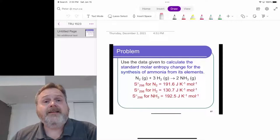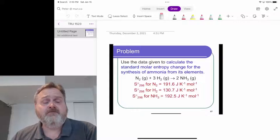In this problem, we're looking to calculate the entropy change at standard conditions at 298 Kelvin for a given chemical reaction using entropy data for the reactants and products.